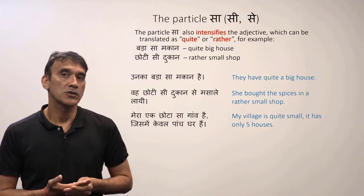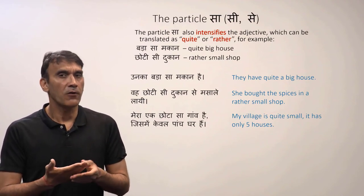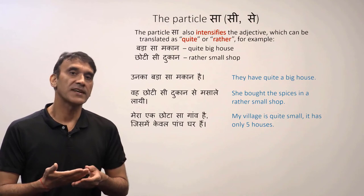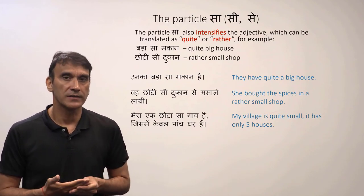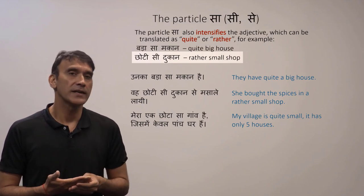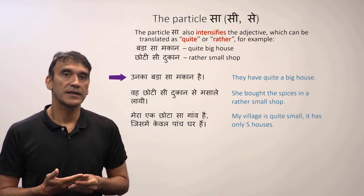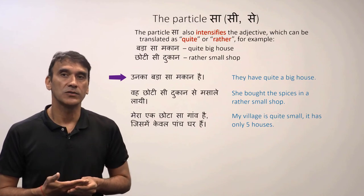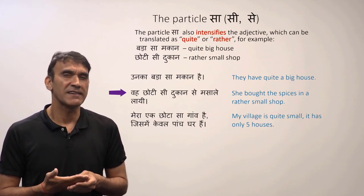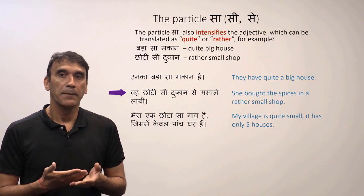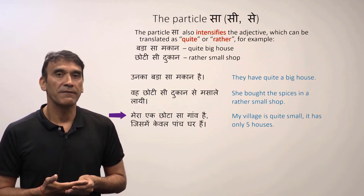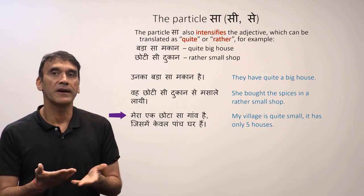The particle 'sa' also has another meaning — it often increases the intensity of an adjective. It can be translated as 'quite' or 'rather'. For example, 'bada sa makaan' means a quite big house; 'choti si dukaan' means a rather small shop. 'Unka bada sa makaan hai' — they have quite a big house. 'Wo choti si dukaan se masale lai' — she brought spices from a rather small shop. My village is quite small; it has only five houses.